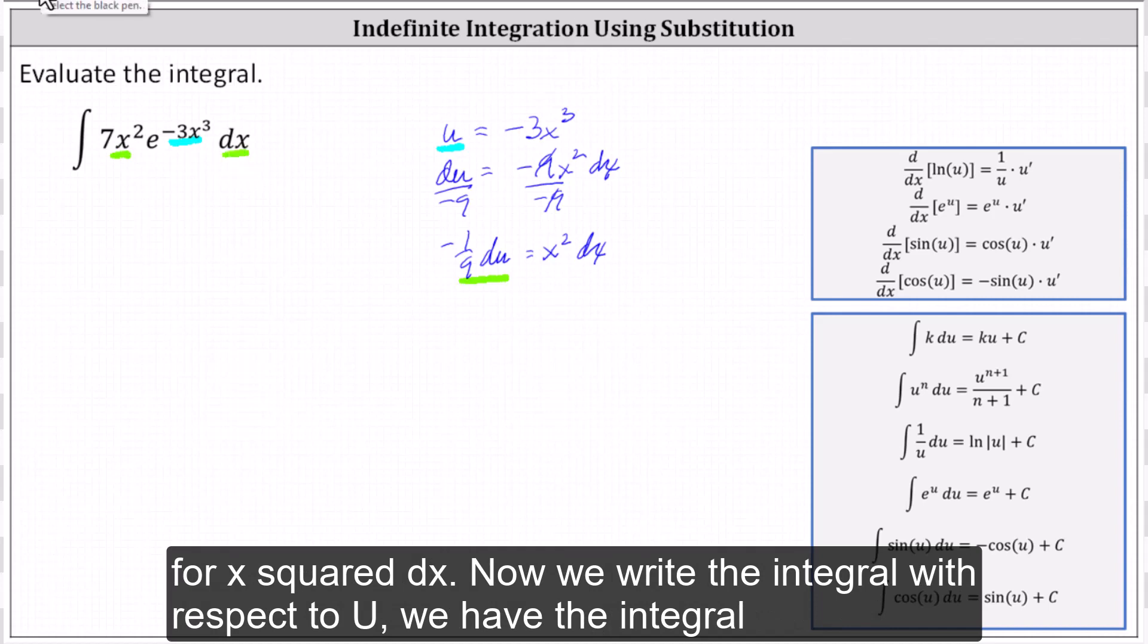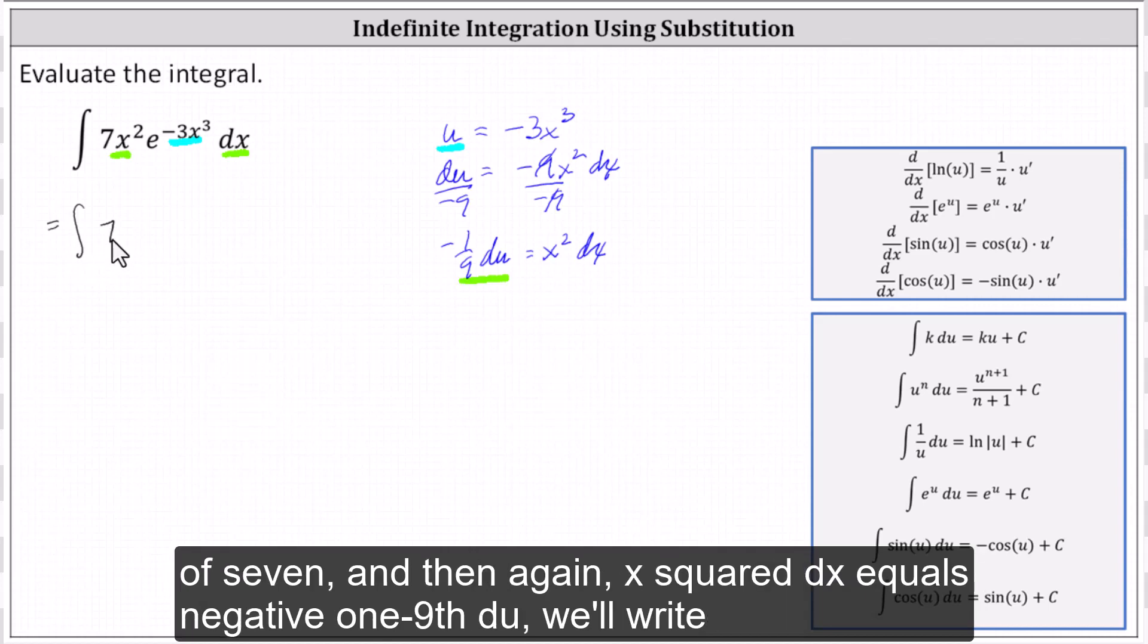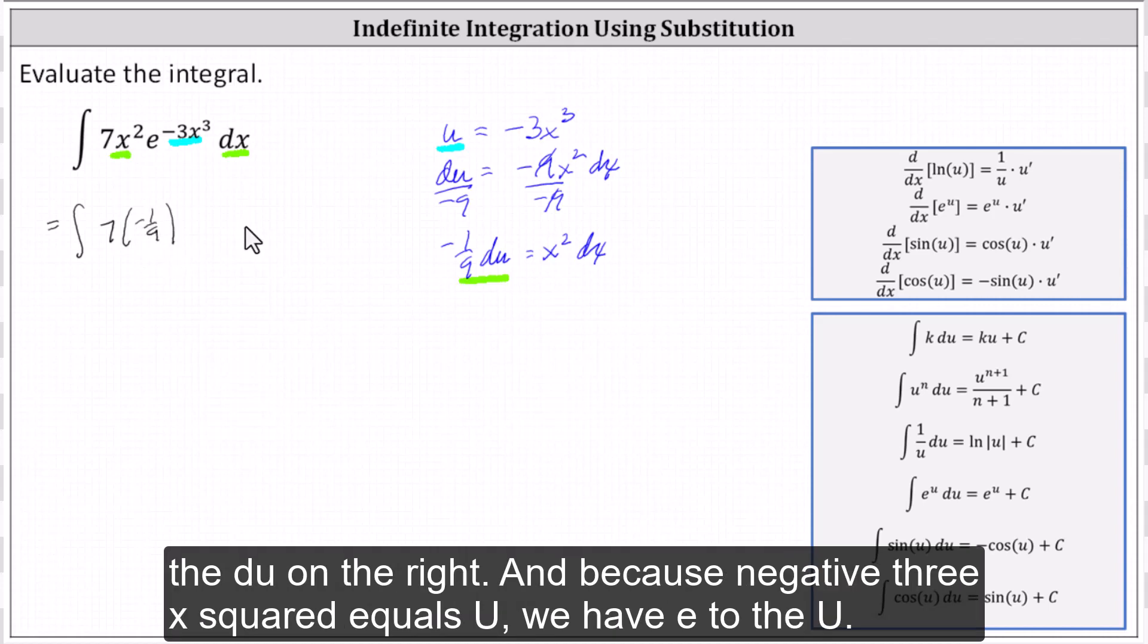Now we write the integral with respect to u. We have the integral of seven, and then again, x²dx equals -1/9 du. We'll write the du on the right. And because -3x³ equals u, we have e to the u.